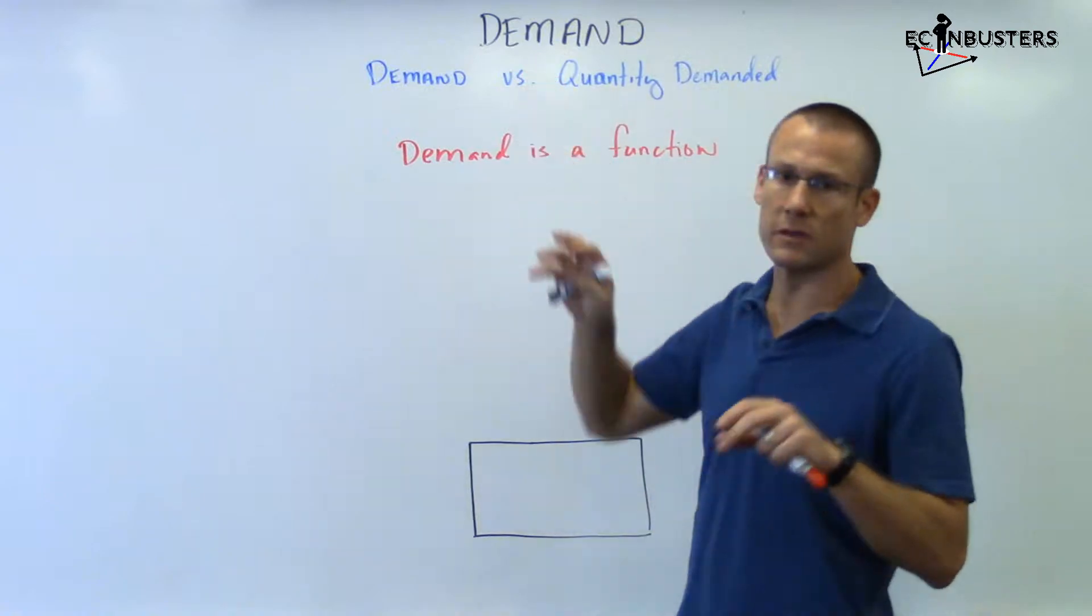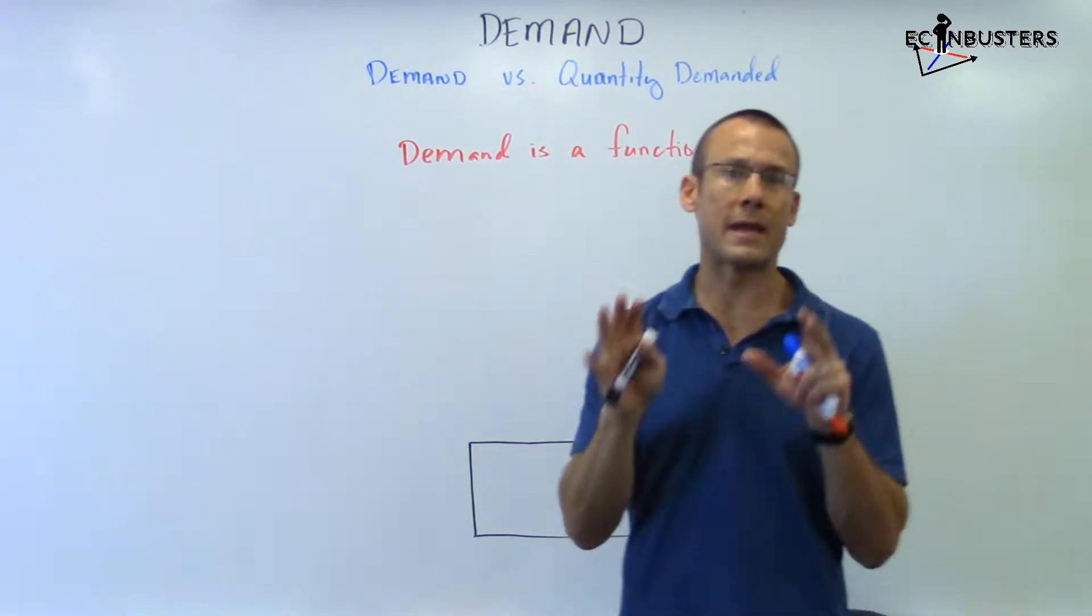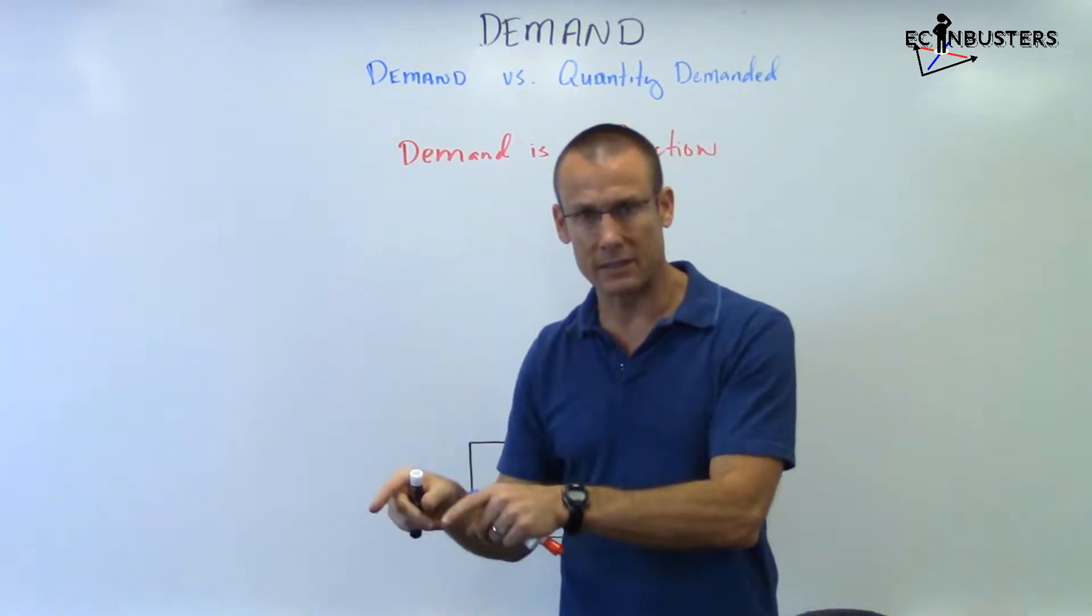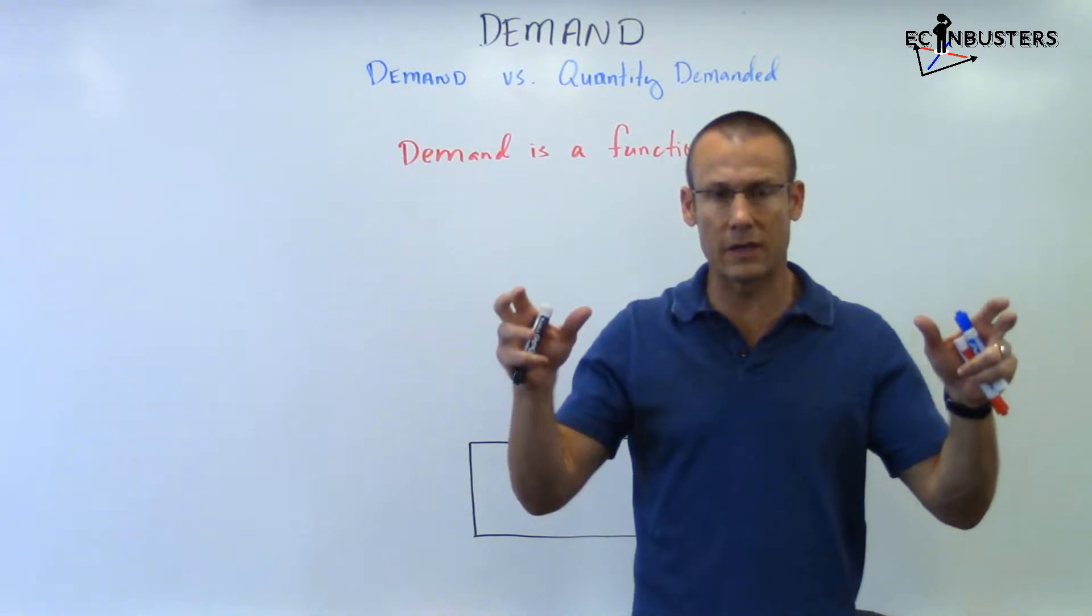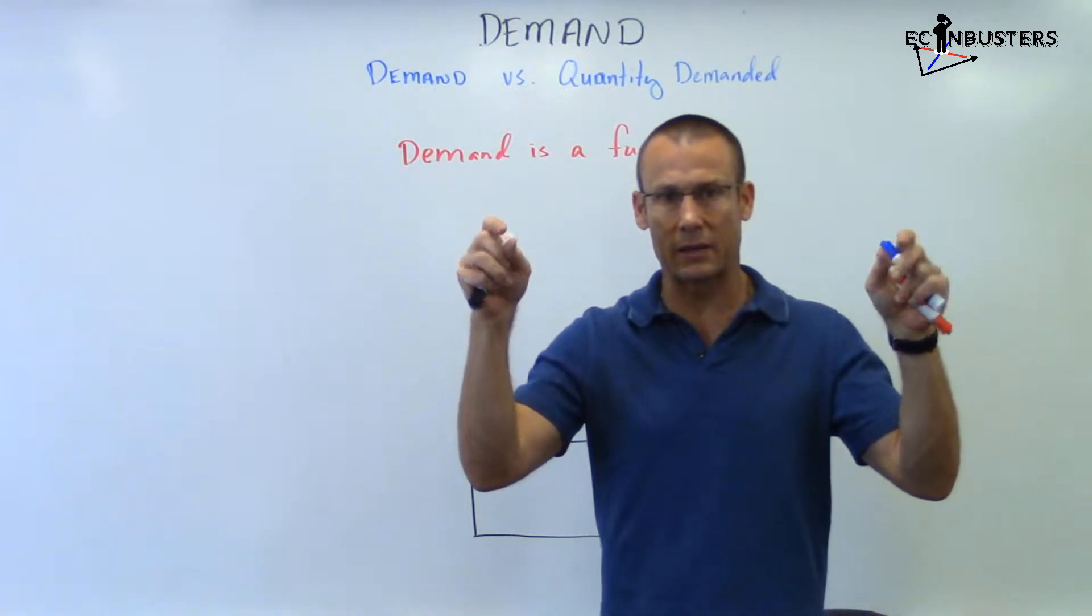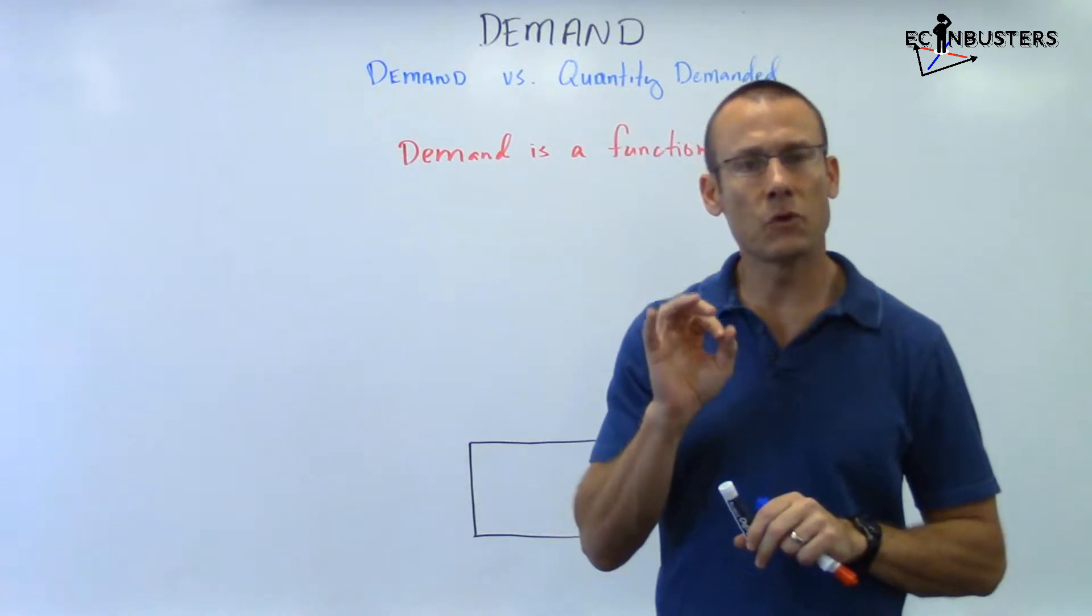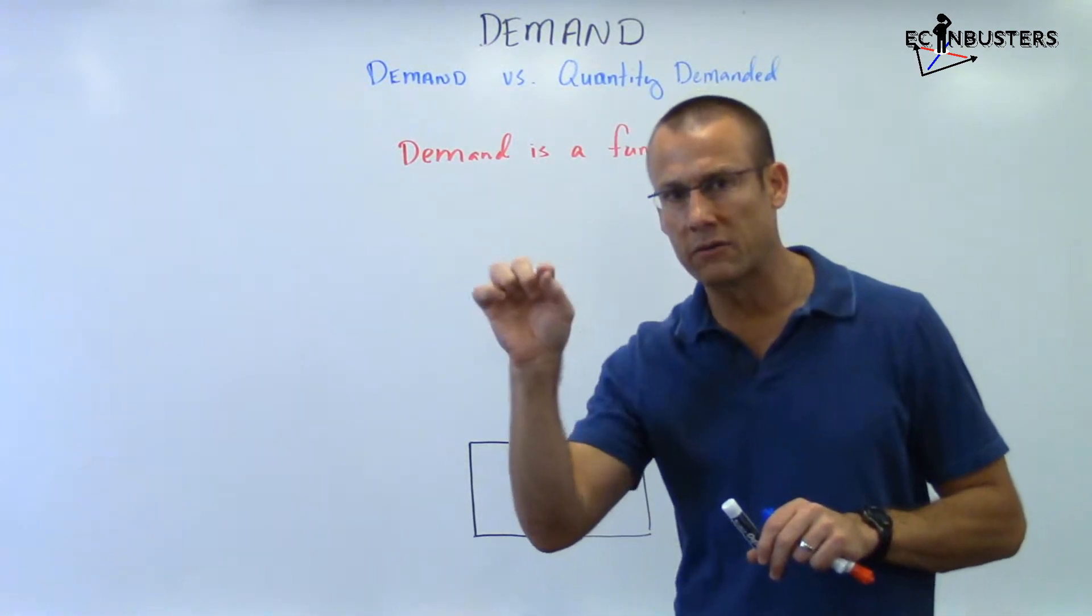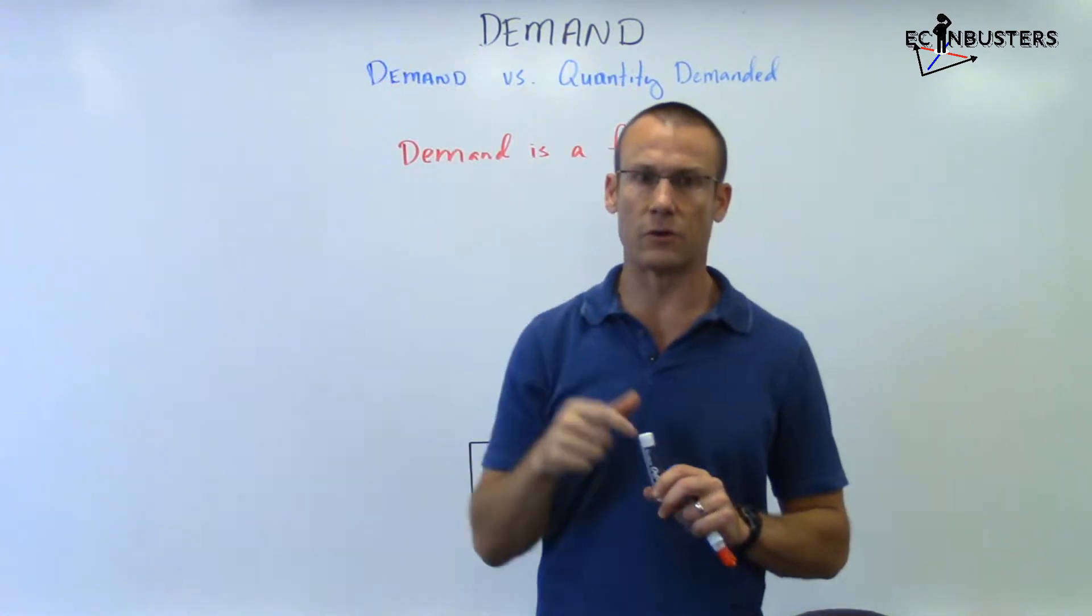Now, you see at the top of the video, it's called demand. Demand is a function. Demand is a relationship. It's telling you the different quantity demanded at all these different price points. Demand is telling you an entire relationship, a series of coordinates between price and quantity demanded. So demand is the relationship. In fact, anytime your professor says demand, what they're really saying is the demand function. So if you're in class and your professor says demand, think demand function, which is not quantity demanded.